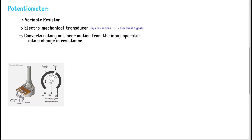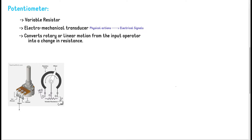This is a rotary potentiometer. Rotary motion causes a change in resistance, which is then converted to an electrical signal. It has three terminals: power, ground, and signal output. Looking at the schematic, we have a resistive track connected to power and ground, with the center pin as the signal output.